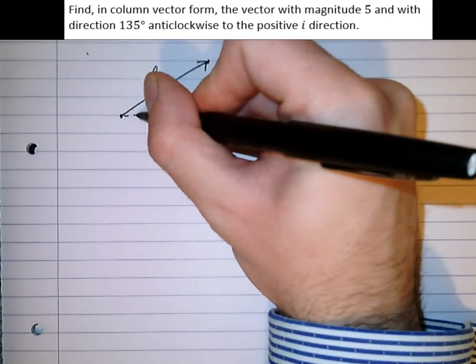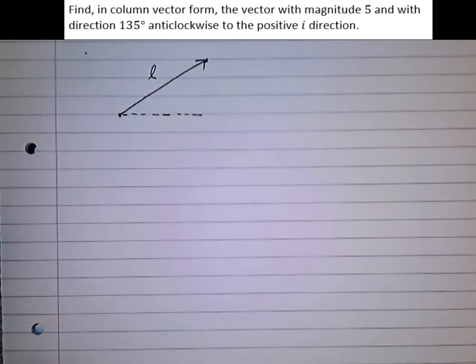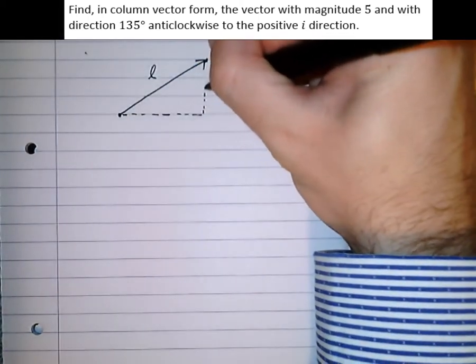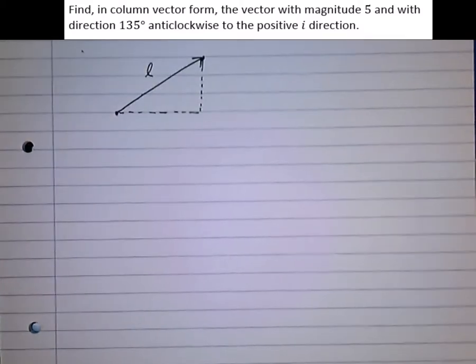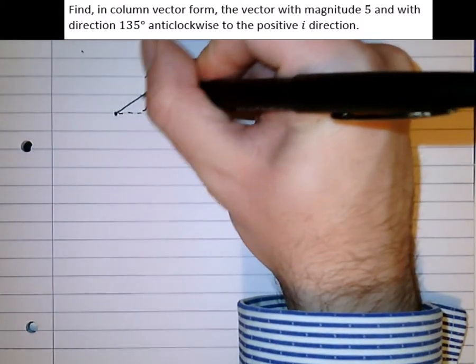So the horizontal distance, or the horizontal component, is there, and the vertical component is there. And this is the angle it makes.